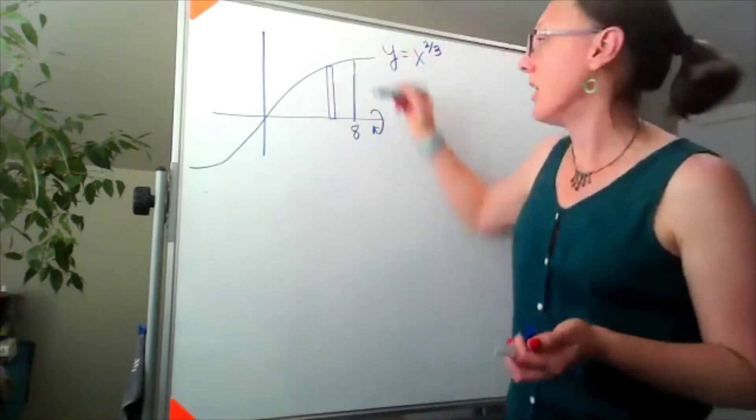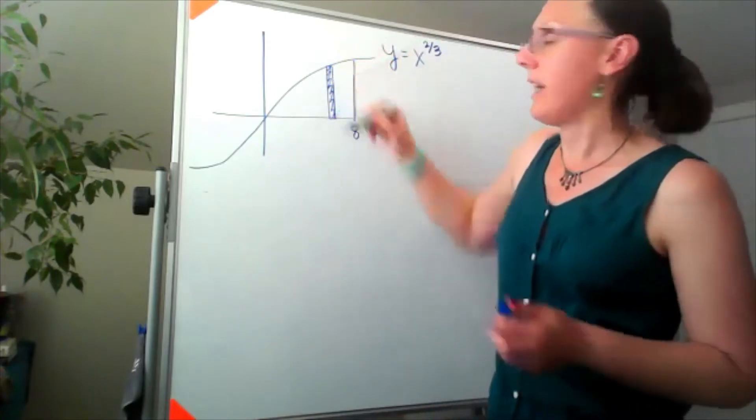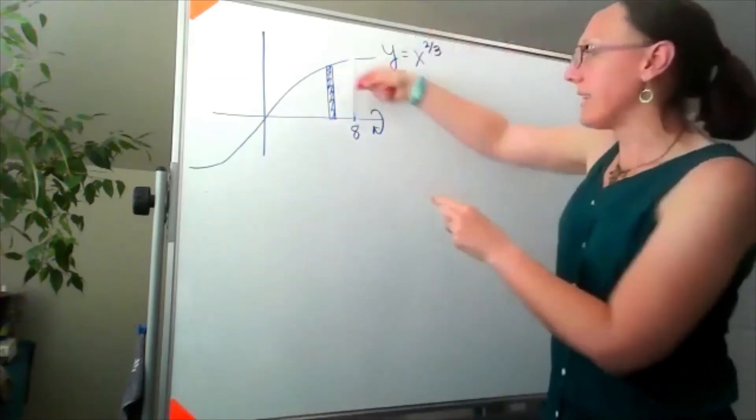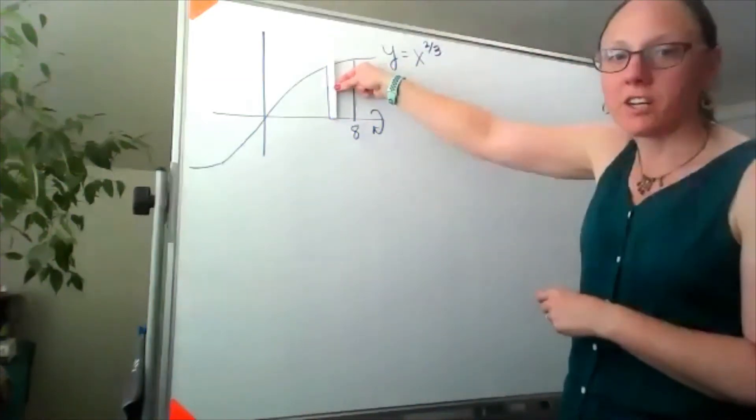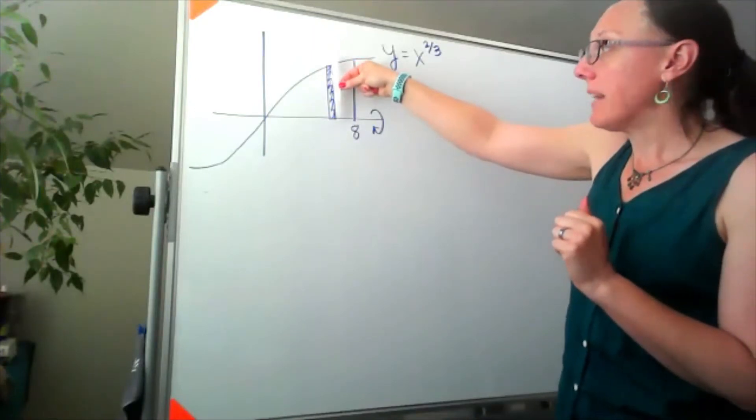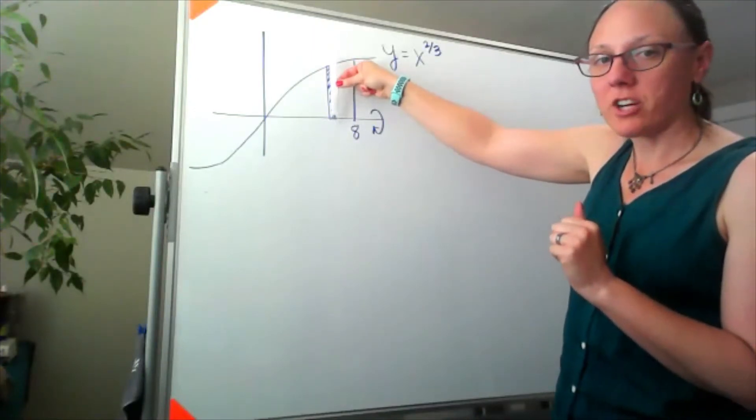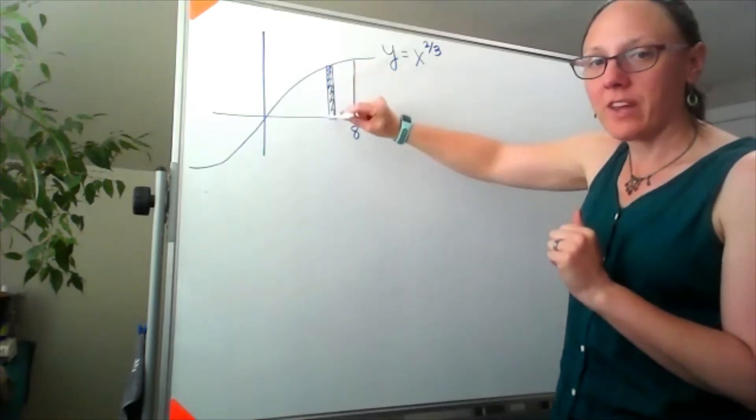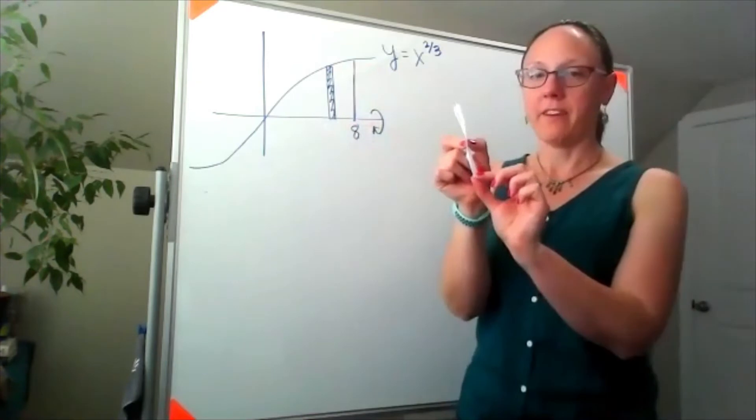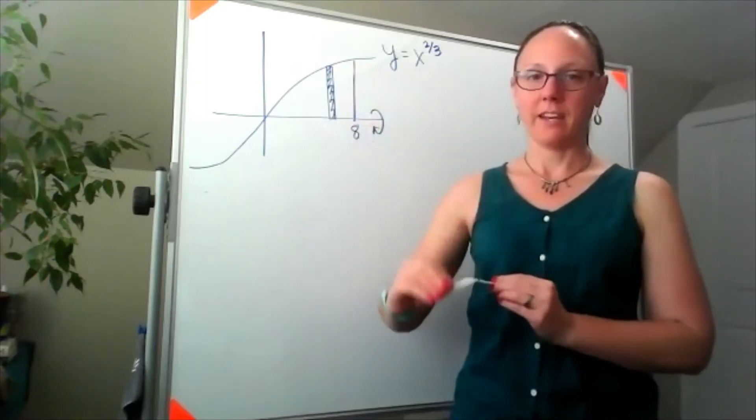If I start with the arbitrary cross section that I would draw if I were just finding an area and I take that arbitrary cross section and spin it around the axis, the shape we're going to form is a circle.